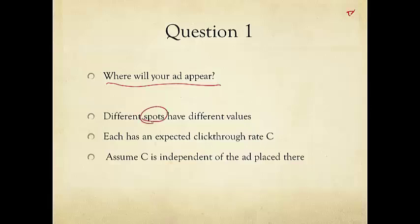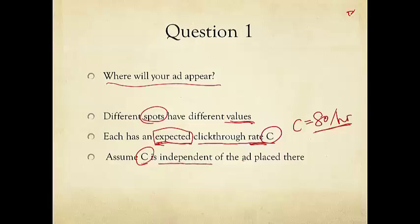We all know how important the Google search results and the advertisements there are in driving traffic to different websites. So different spots on the given page have different values. We can summarize that value through a single number called C. This is a positive real number. It is the expected click-through rate. For example, if C is 80, it means 80 clicks per hour. Based on some historical data, an advertisement placed at this spot would generate 80 clicks every hour.